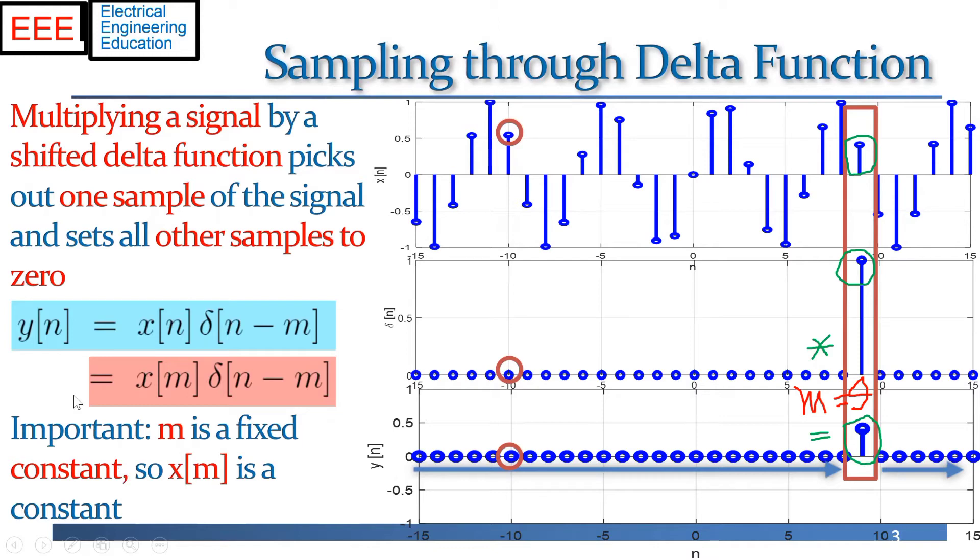We can say that if we multiply a signal x of n by a delta pulse that is shifted to peak up at the time point m, then that is equal to the exact same delta function, but now multiplied not by a signal anymore, x of n, but multiplied simply by a number x of m. And that's what we mean by sampling, that multiplying a signal with a shifted delta pulse sifts out or pulls out this sample, x at the time point m.